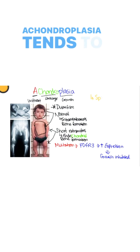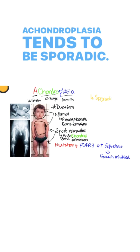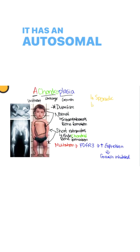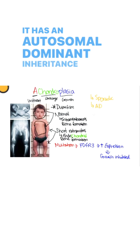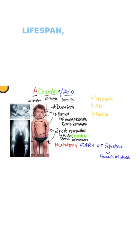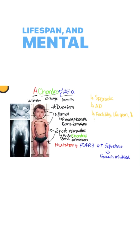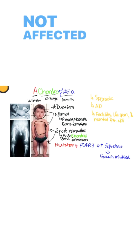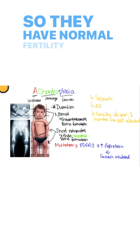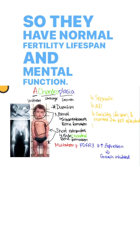Achondroplasia tends to be sporadic and has an autosomal dominant inheritance pattern. Fertility, lifespan, and mental function are not affected in these individuals — they have normal fertility, lifespan, and mental function.